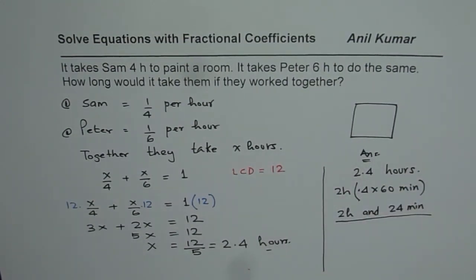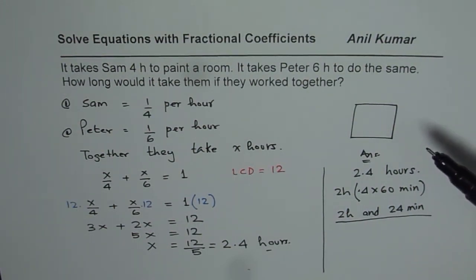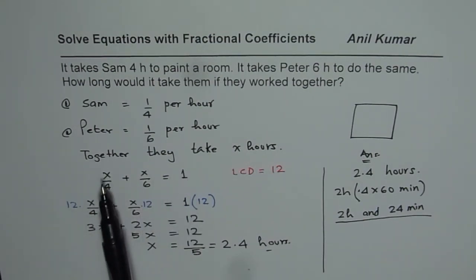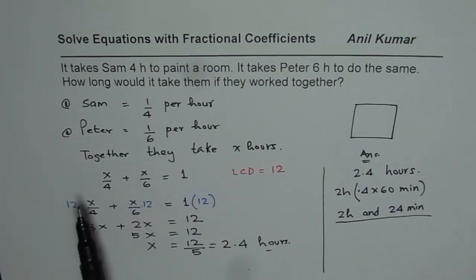I hope that helps. Let's go through it once again. Whenever you have job done or work done, find the rate of doing work. Formulate the equation by defining your variable. X is the unknown time. So it is x over four plus x over six equals to one. Solve the equations with fractions by taking common denominator, multiply each term and then solve for x.